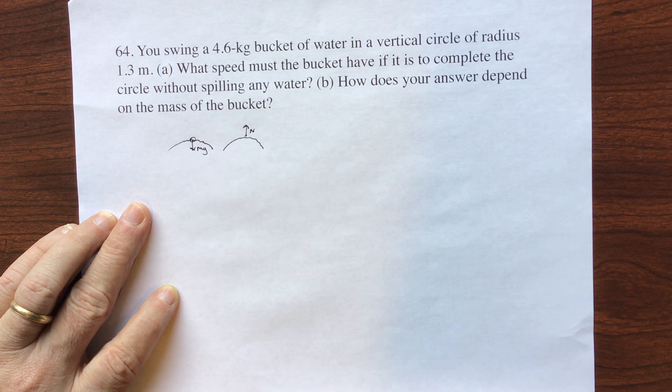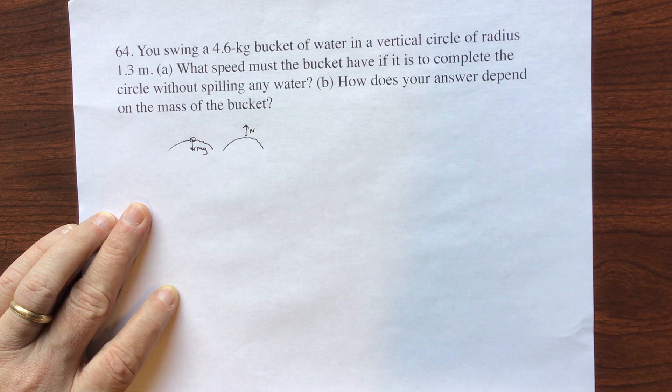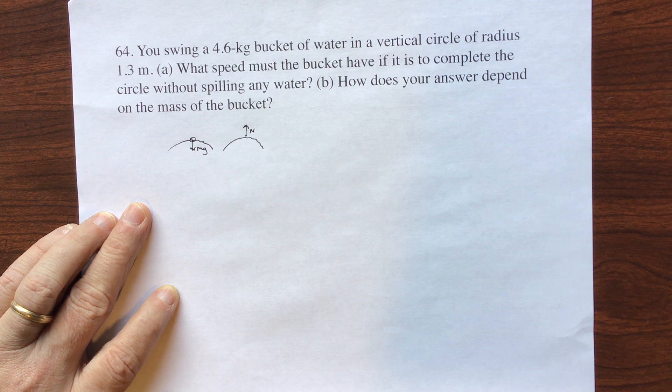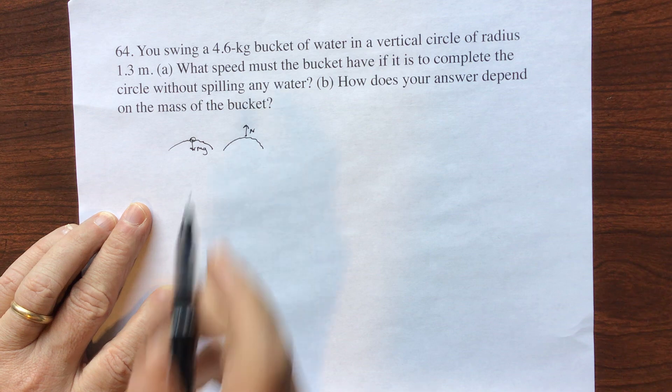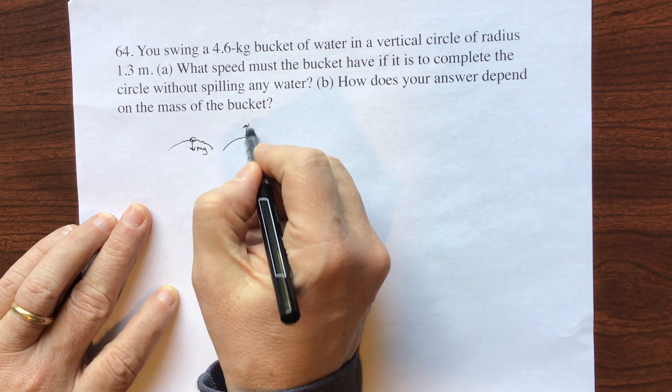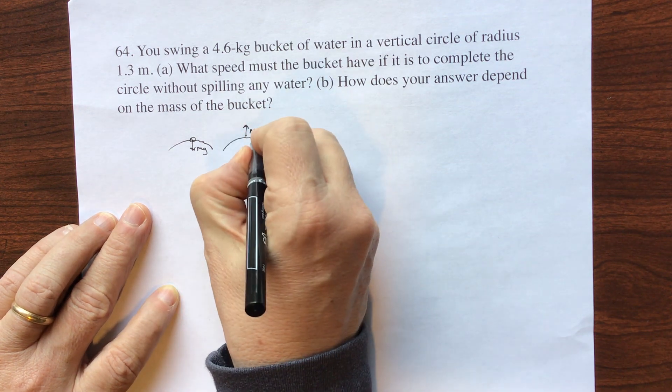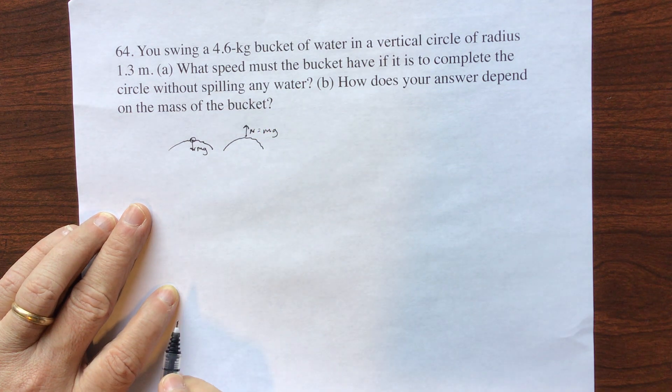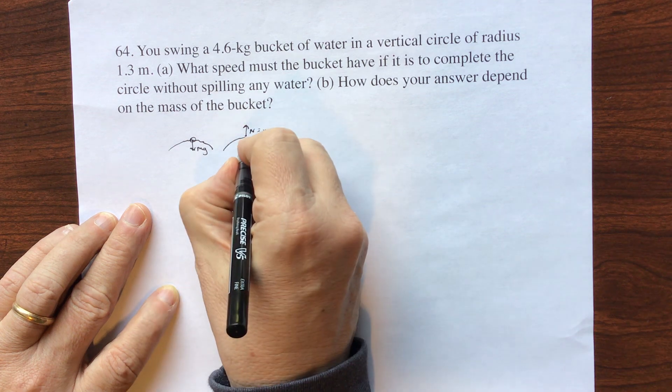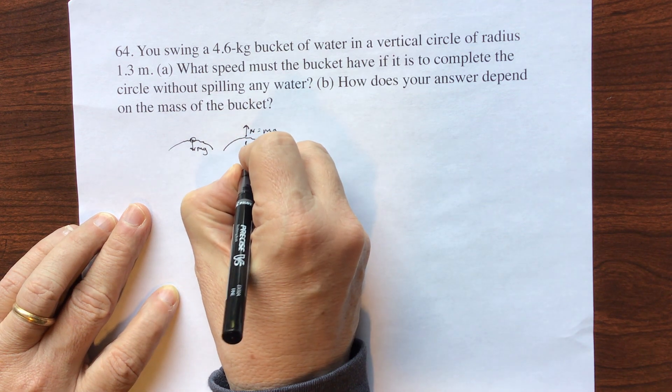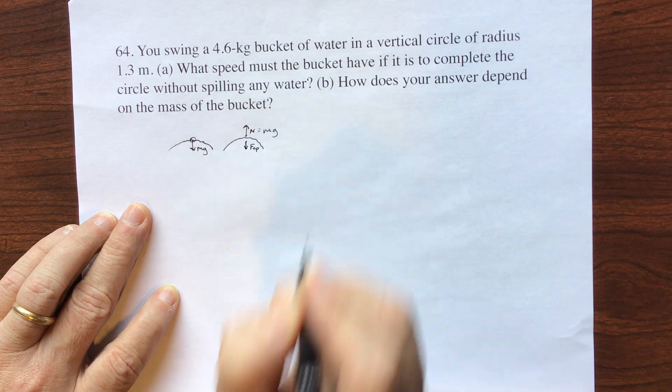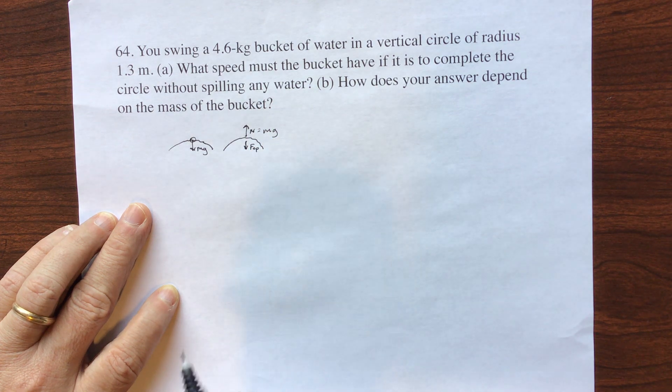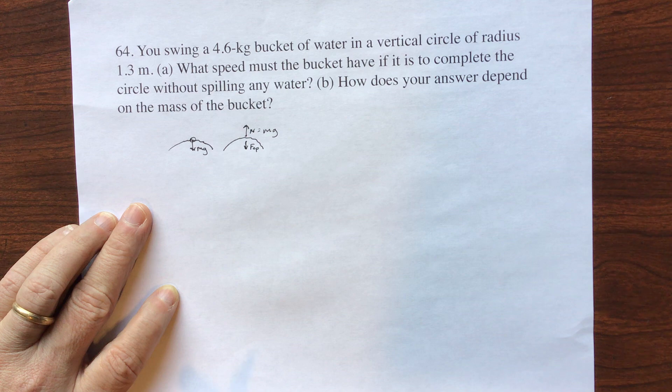So in this case, it's pushing the water into the top of the bucket or into the bottom of the bucket as it's going around the top of the arc. So you're kind of moving your arm around and the water's in and it doesn't slosh out. So in this case, you've got n equals mg and it's going away from the top of the circle. Your centripetal force is always acting towards the center of the circle.